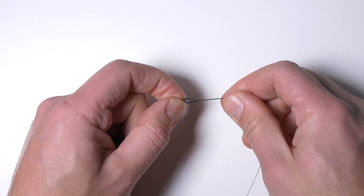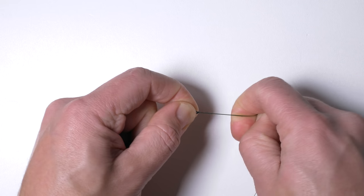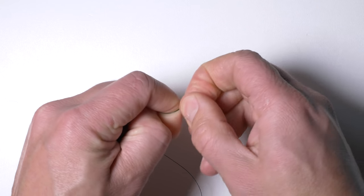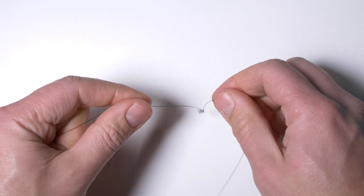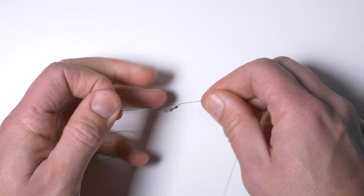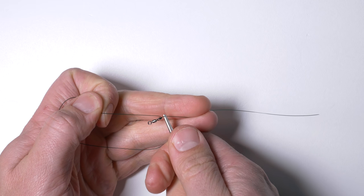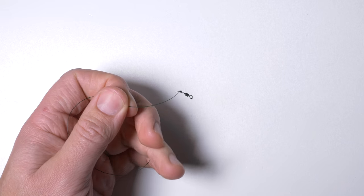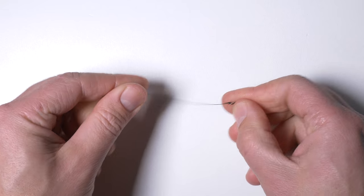Don't forget to wet the knot before pulling it tight. Then I will trim off the tag end. Then I will slide the rubber bead onto the swivel.